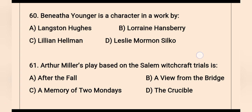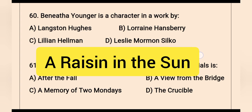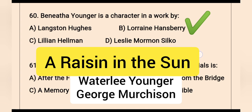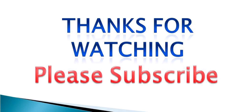Question 60: Benita Younger is a character in a work by — Benita Younger appears in A Raisin in the Sun written by Lorraine Hansberry. It's a tragedy in which Benita Younger is an attractive college student, a feminist whose ambition is to become a doctor. Lorraine Hansberry's A Raisin in the Sun is about a Black family's experiences in South Chicago. Other characters include Walter Lee Younger and George Murchison. That's all for today — I hope the video is helpful to you. Thank you for watching and keep learning.